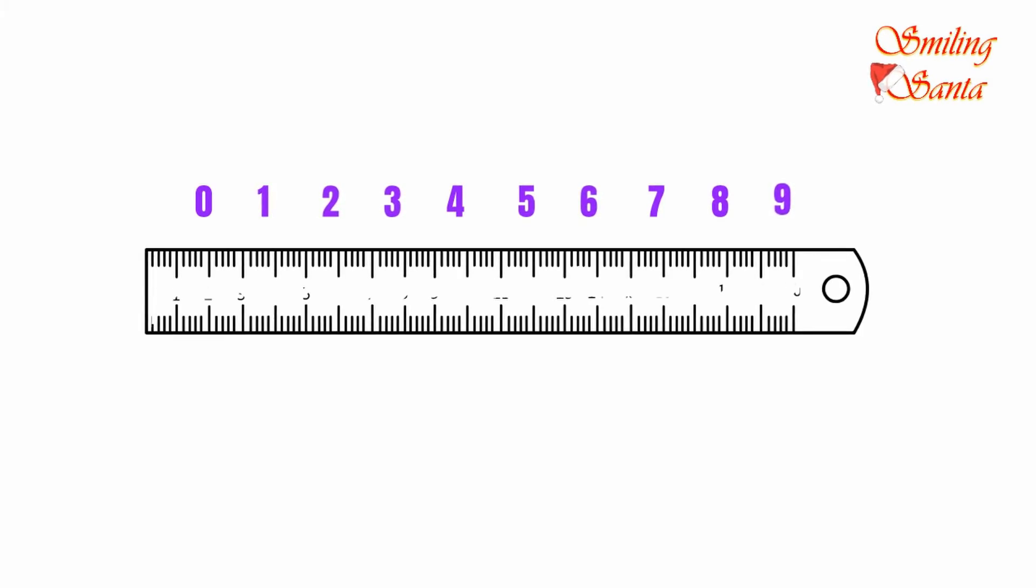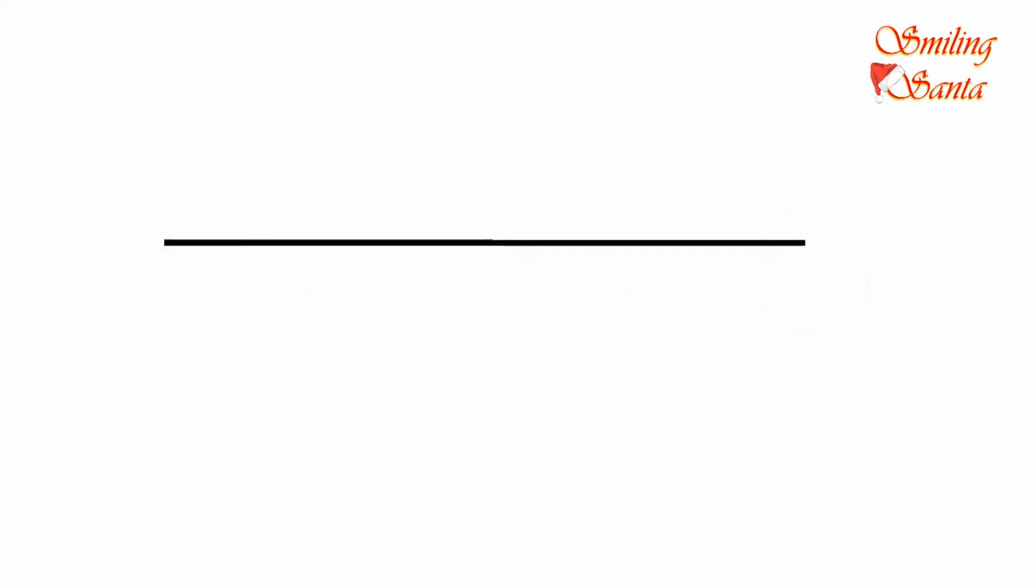Take a ruler and make a straight line. We want our numbers to be placed on this line. Where will they be placed? We need marks for that. So, mark on the line for putting the numbers. These marks should have a little space in between, as we want the numbers to look neat and clean.